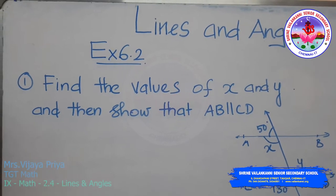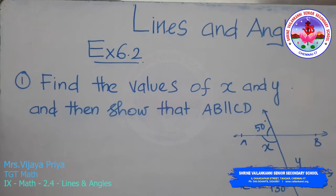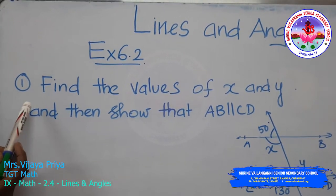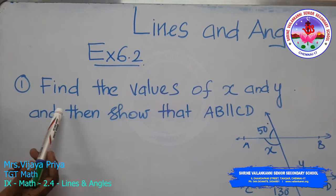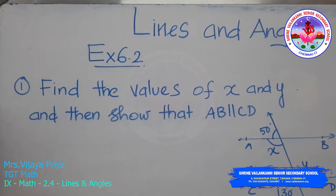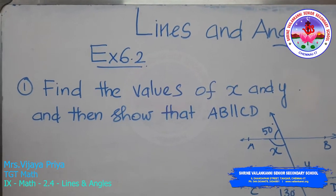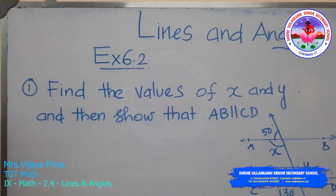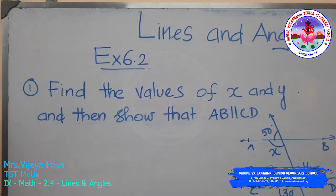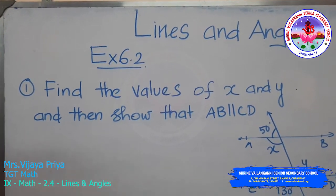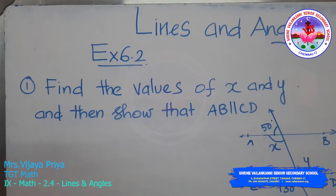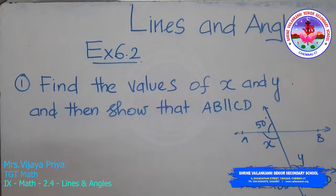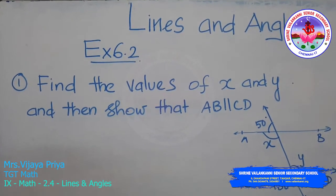Hello students. Today we are going to see exercise 6.2. The problems in exercise 6.2 deal with using three properties: the corresponding angle axiom, alternate interior angles, and the sum of co-interior angles equals 180. Also, some problems may use the converse of these properties.